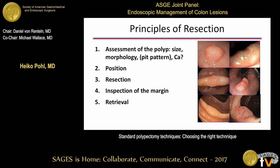The principles of polyp resection apply in five steps. First, assess the lesion—its size, extent, and morphology—primarily to confirm it is approachable with endoscopic resection and that no invasive cancer requiring surgery is missed. Second, position: the position of the colonoscope towards the lesion is the most important aspect of any endoscopic intervention. Third, the resection itself. Fourth, inspection of the margin to confirm complete resection and remove anything left behind. Fifth, retrieval of the specimen.